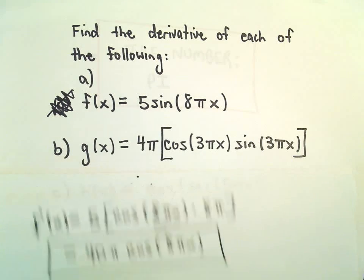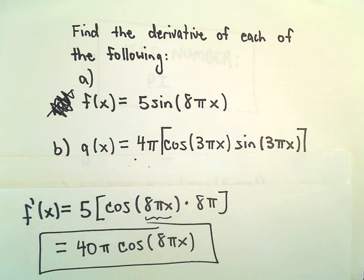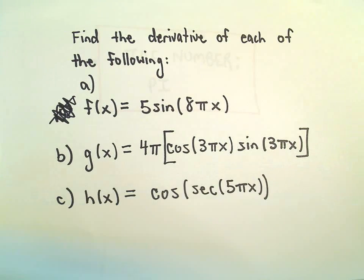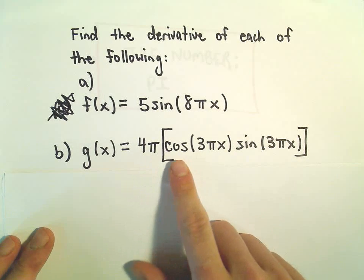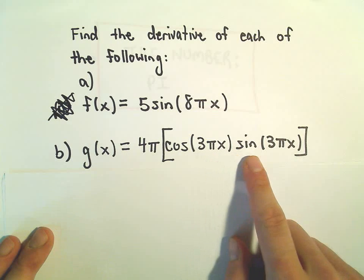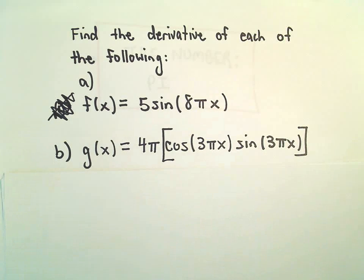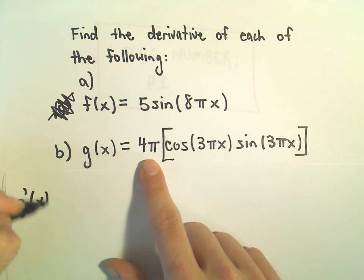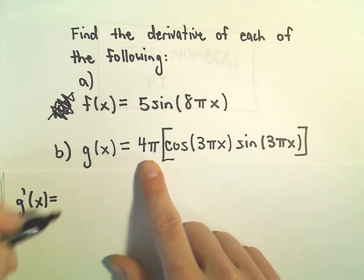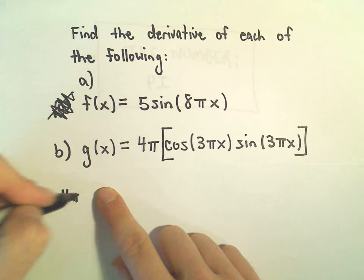So, maybe let's do part b here as well. Here we've got 4π times cosine of 3πx times sine of 3πx. Again, we've got a constant out front. We'll just sort of leave that alone and multiply it back at the end. So, let's leave the 4π alone.